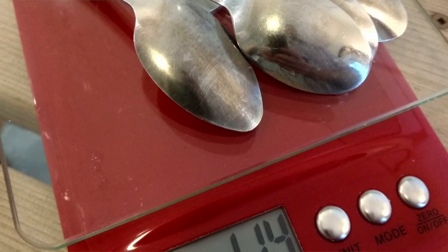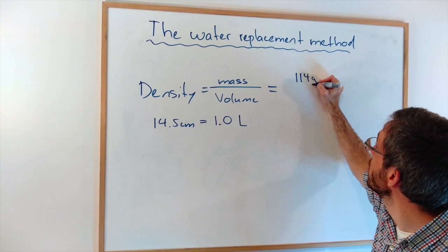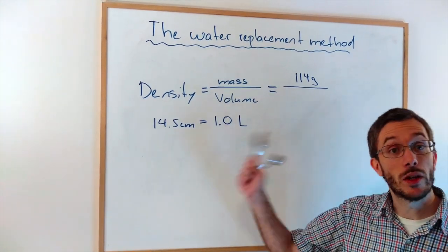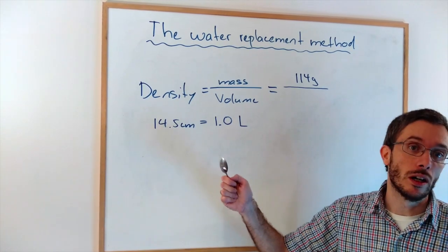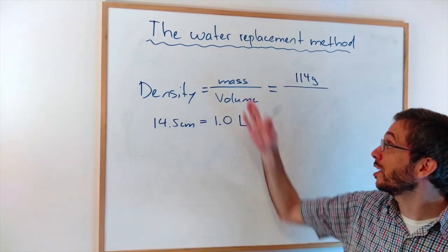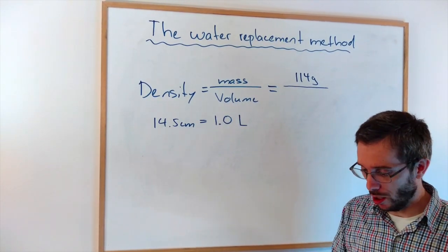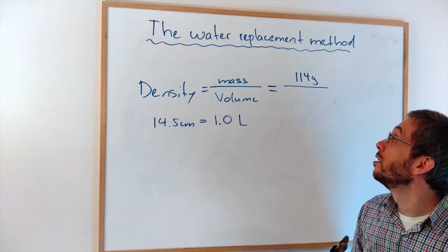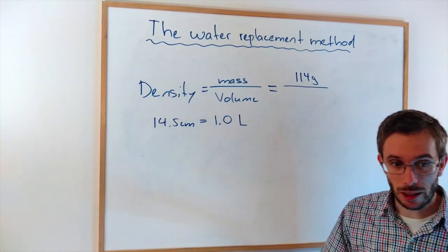So I get 114 grams. Again, I'm using seven spoons instead of one because the density is the material property. It doesn't matter the amount of material you take. If I take more mass, I will get more volume. With higher amount of material, I will get a better precision.